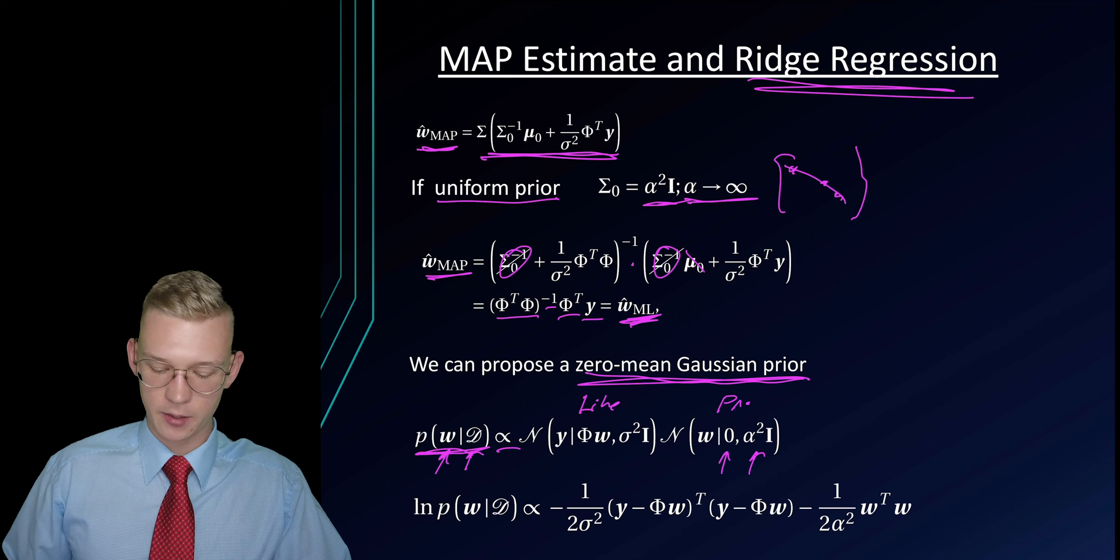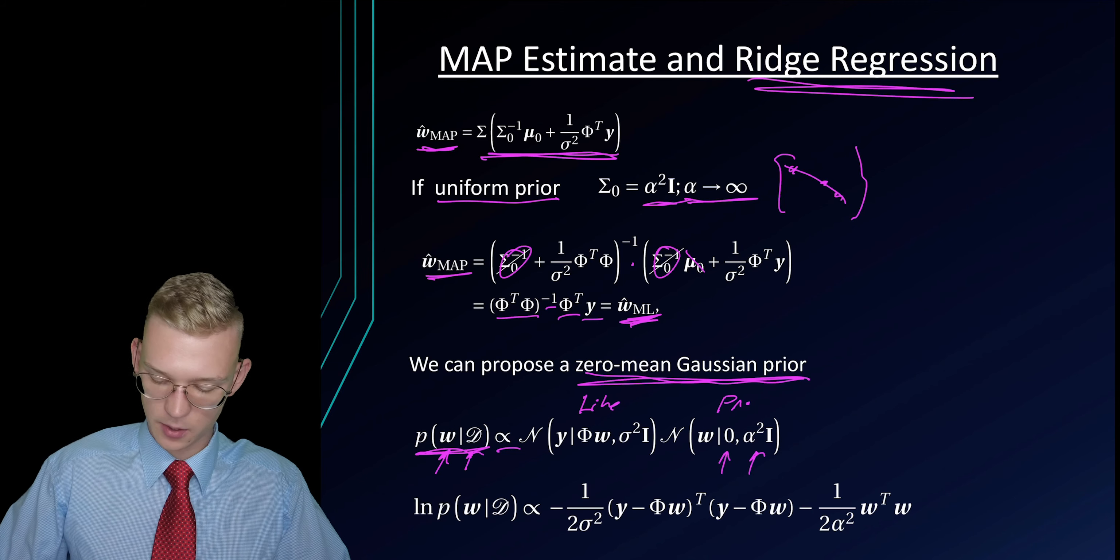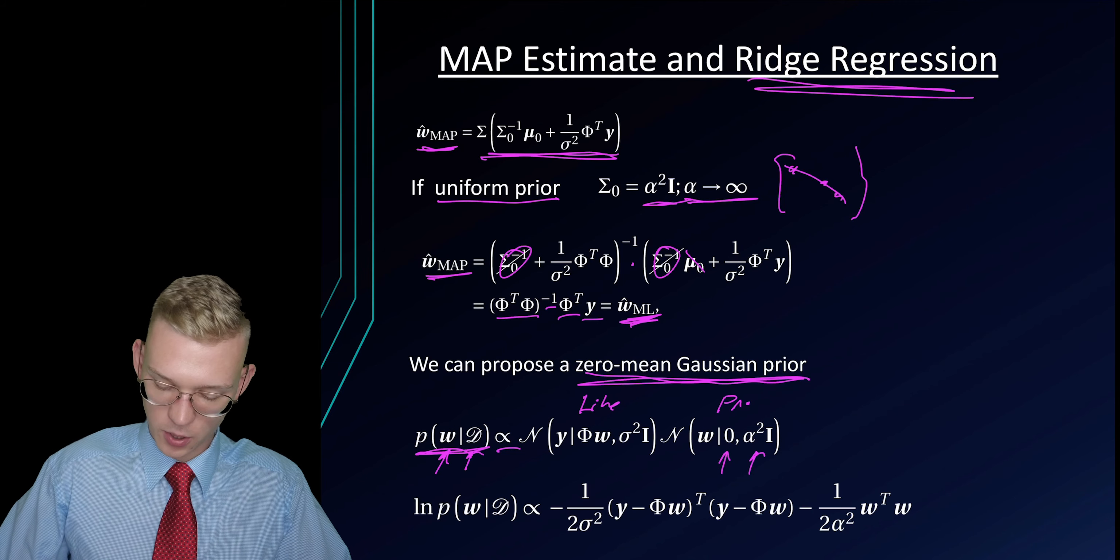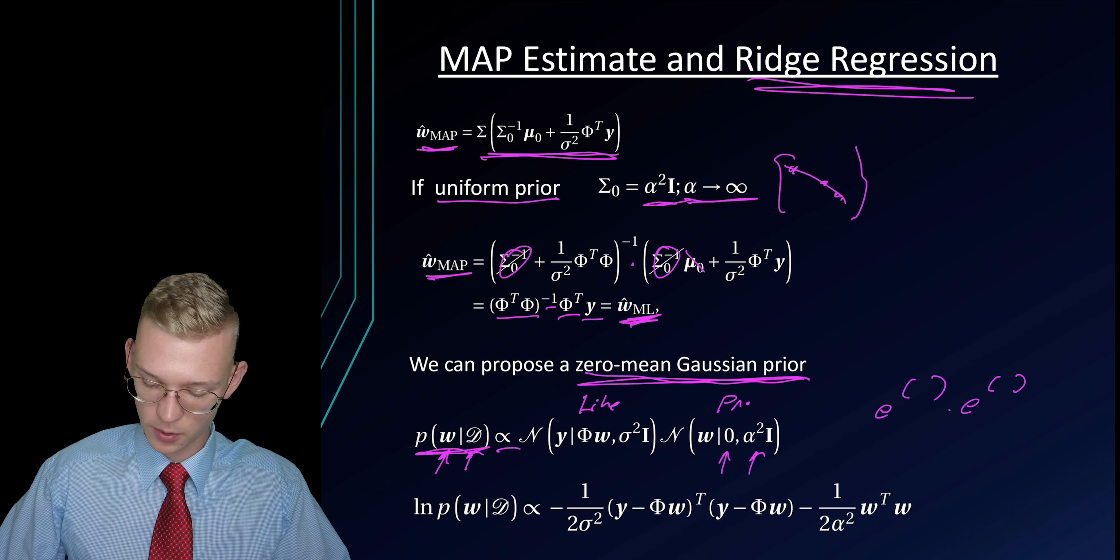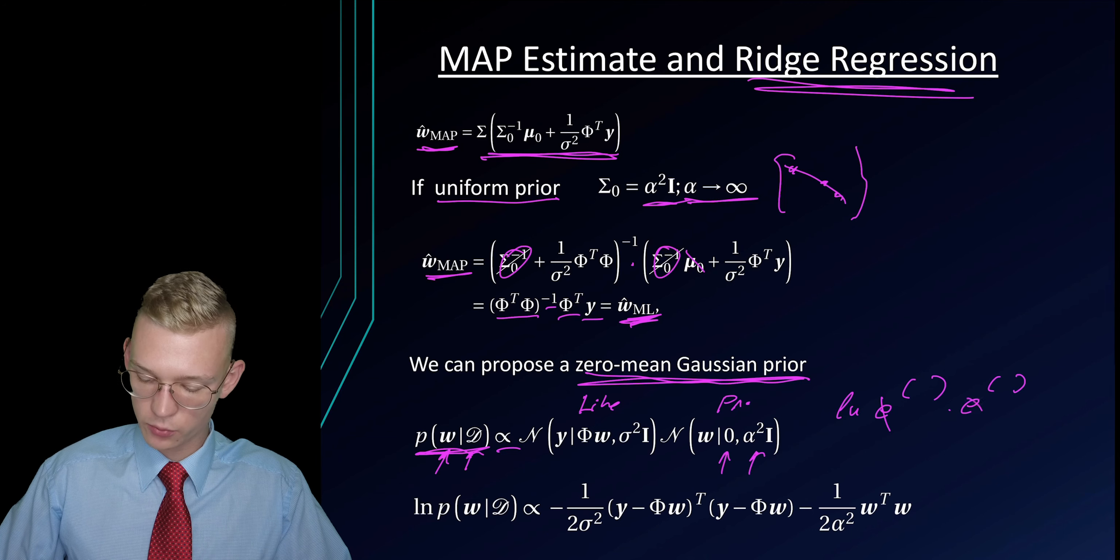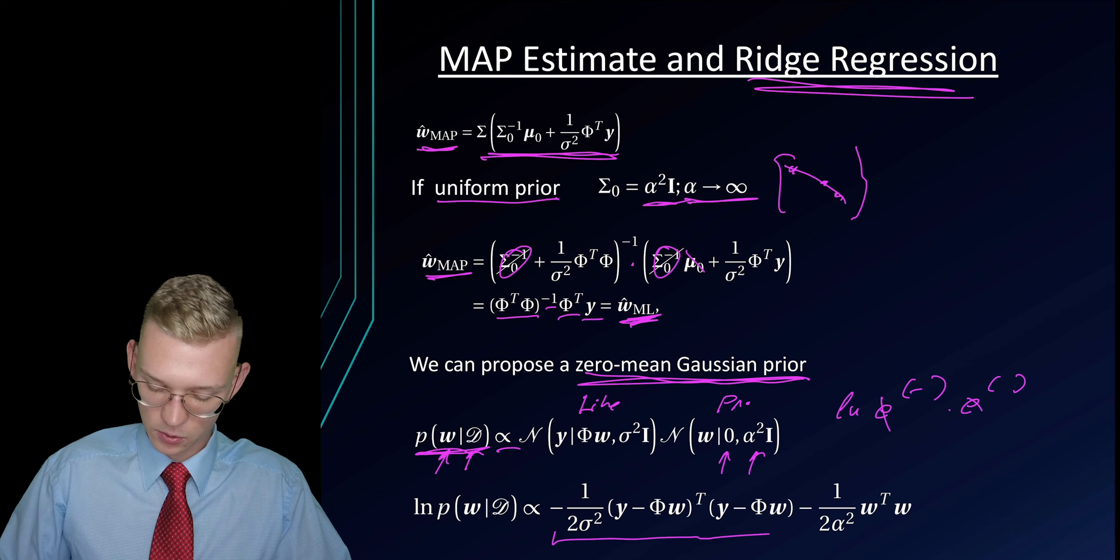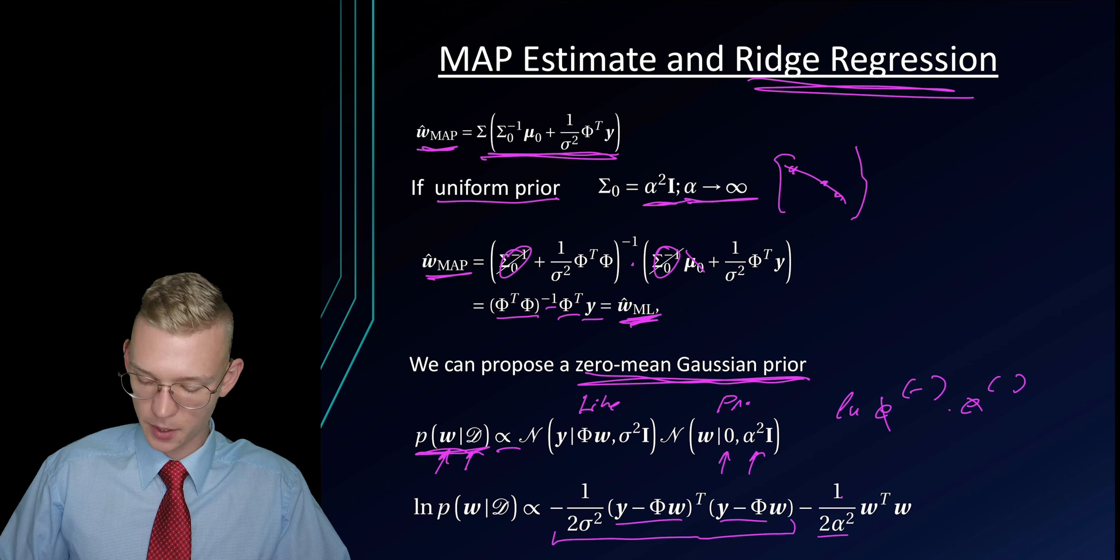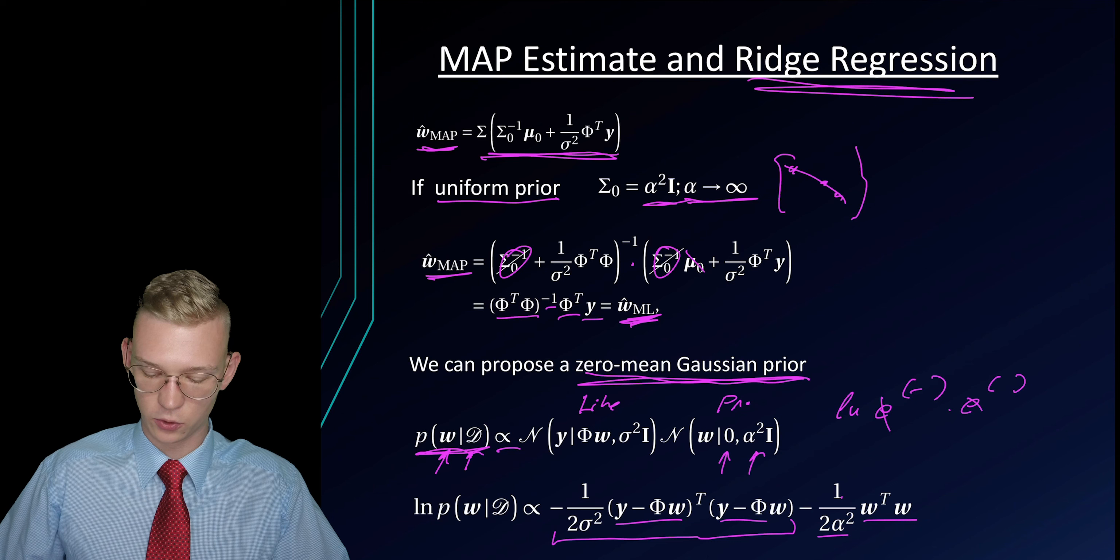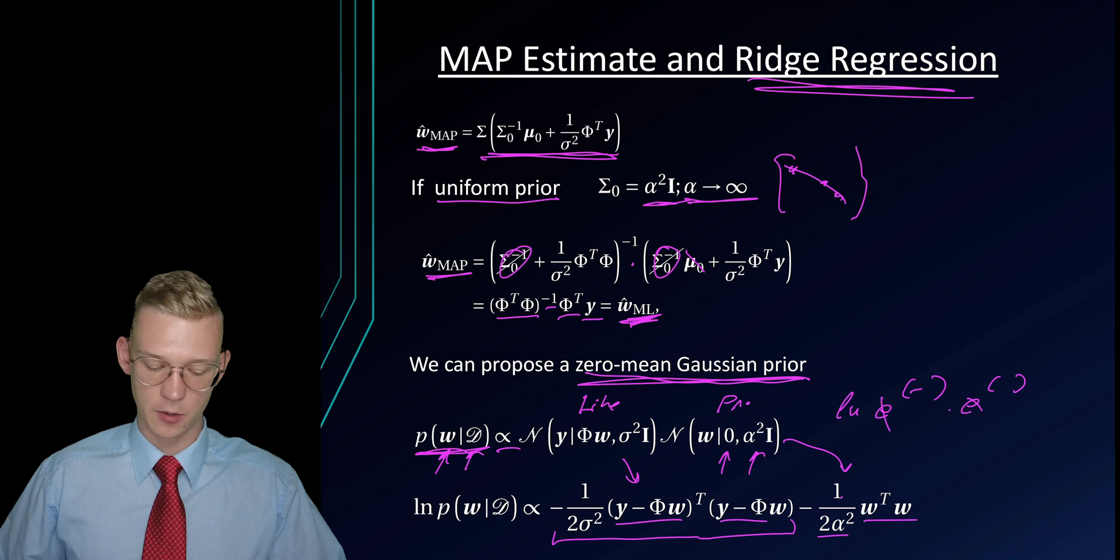If we take the logarithm, we have the exponential e to this one times e to this one. We take the logarithm, we get rid of our exponential and just take the term in the brackets. We have a minus 2 divided by sigma and these two terms minus 1 divided by 2 alpha squared of these two terms. This comes from here and this part comes from there.